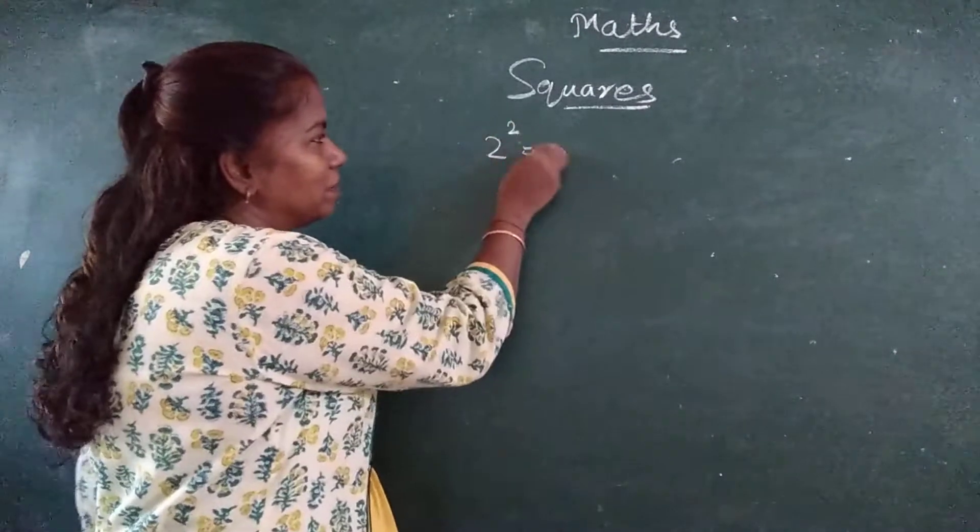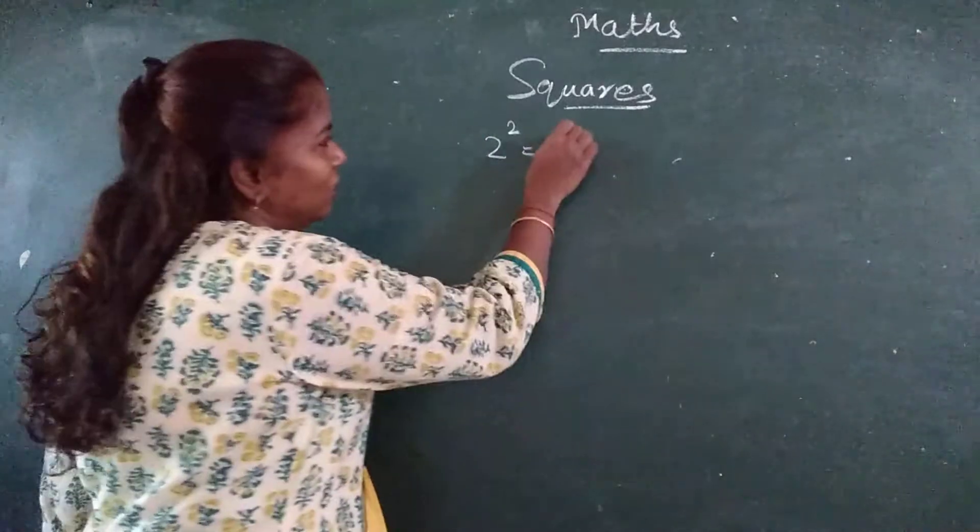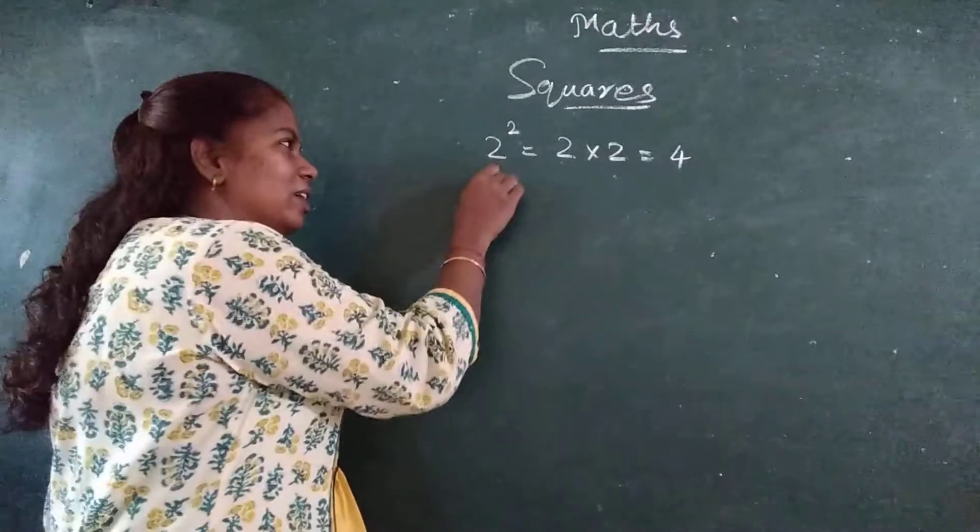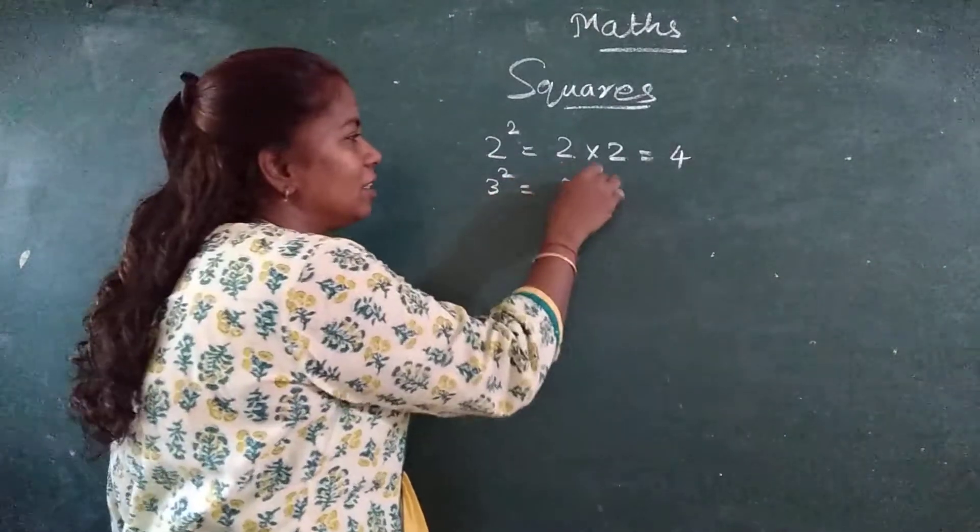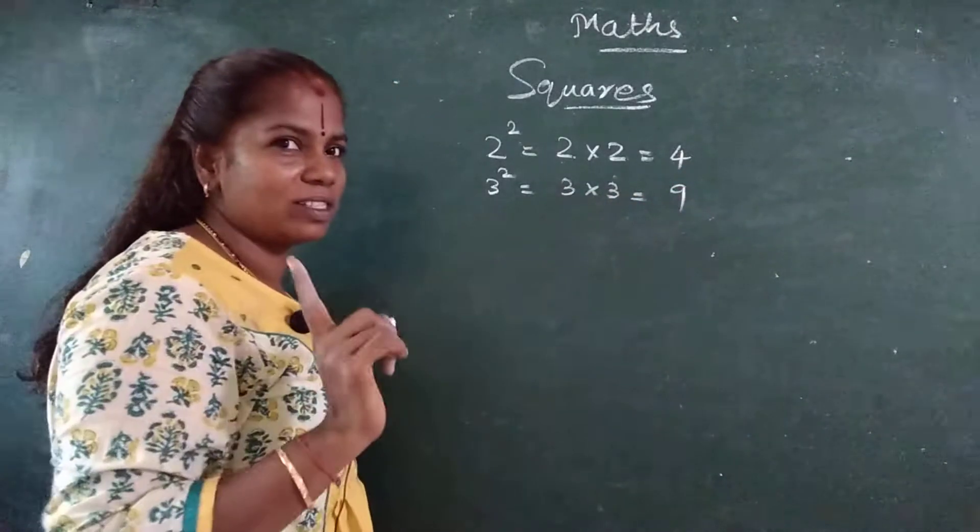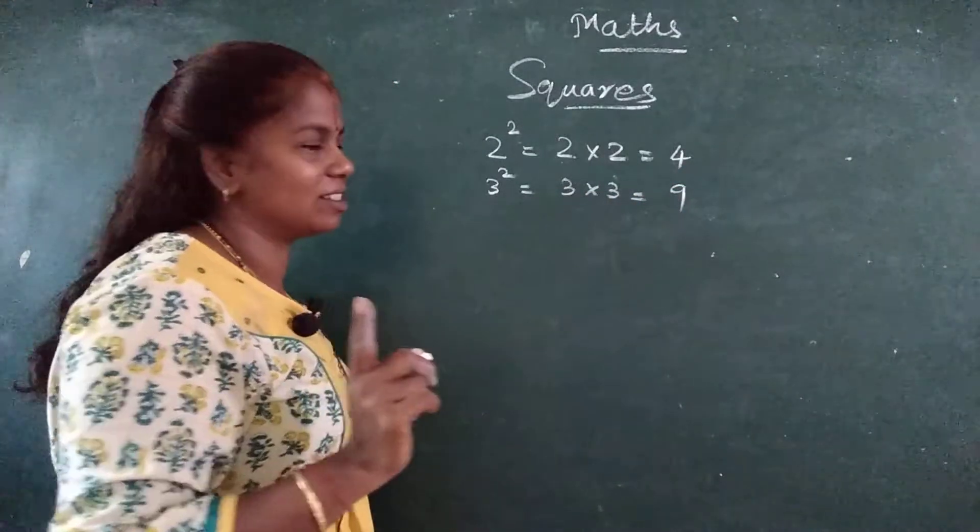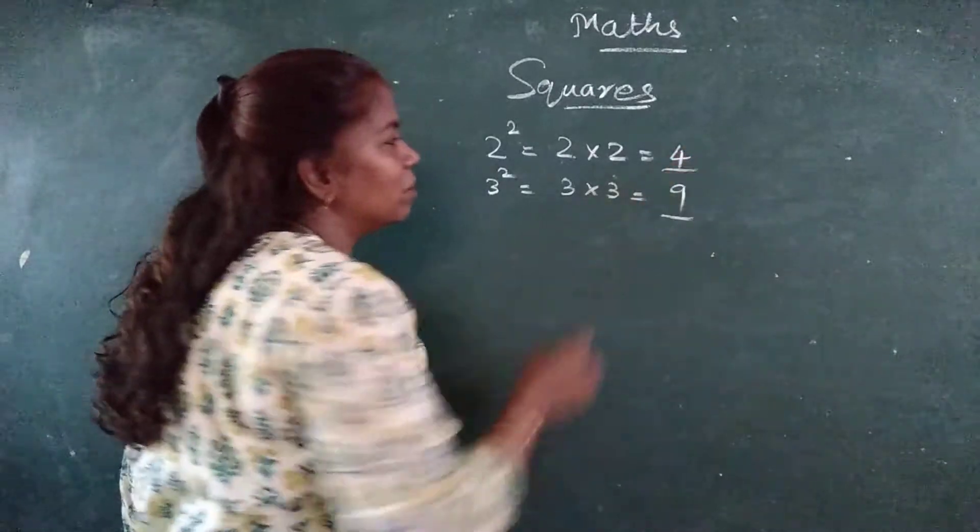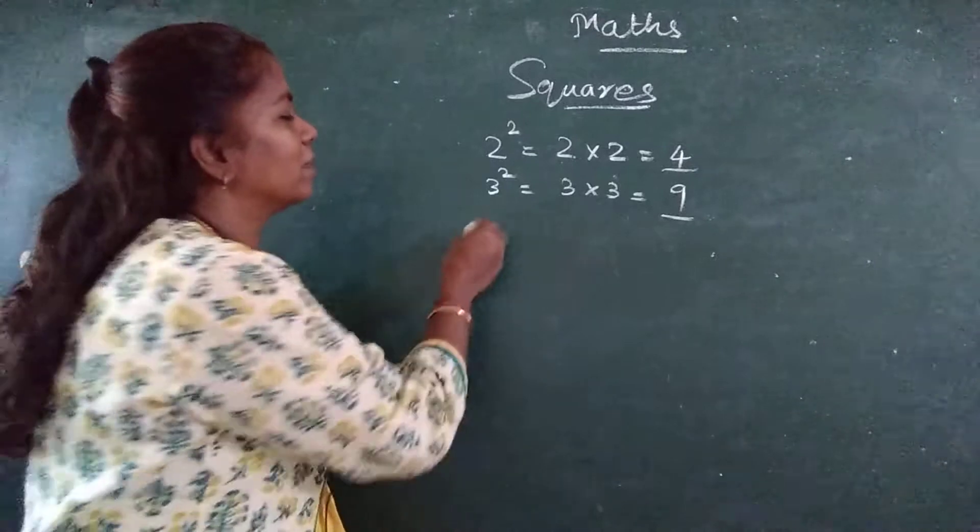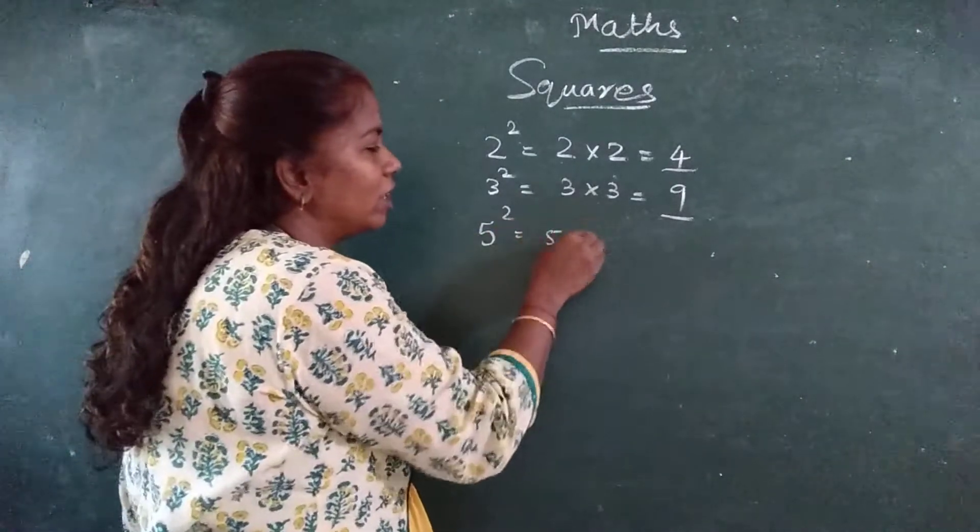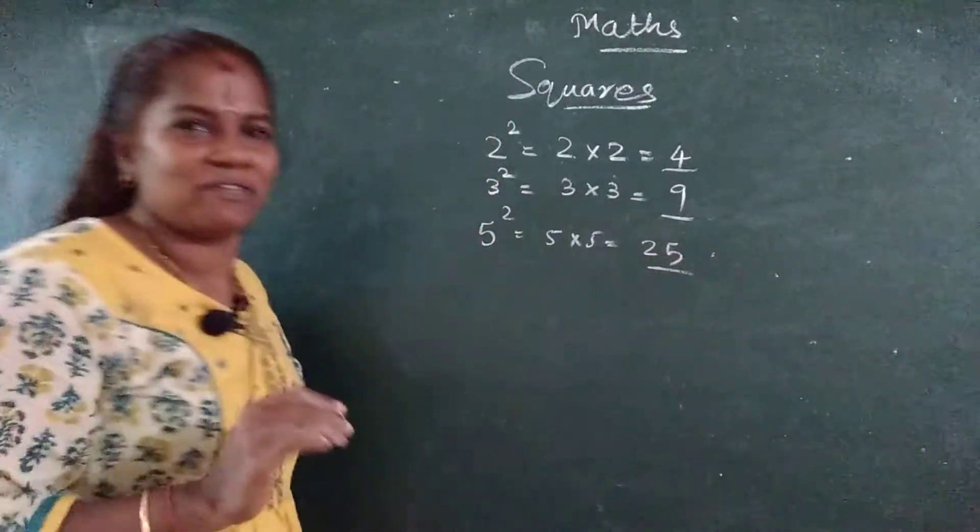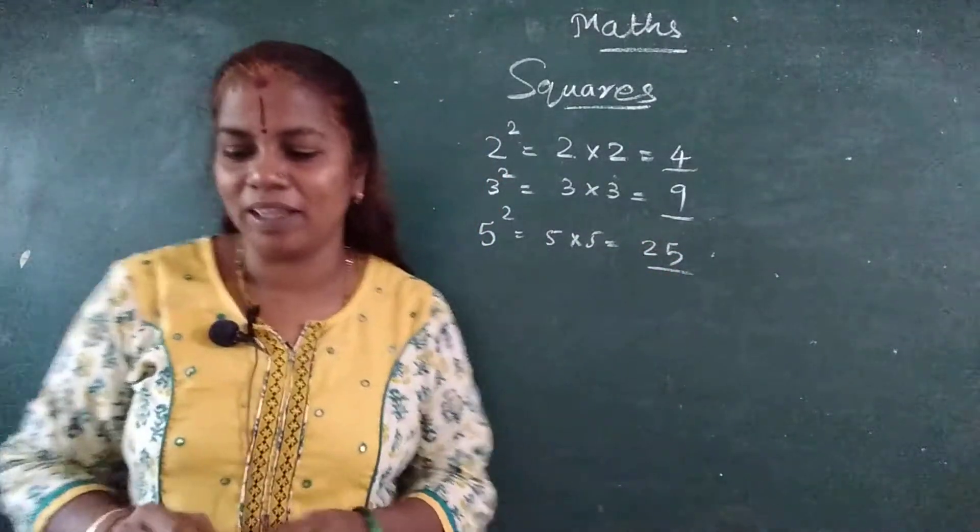Now 2 square. How will you do? 2 into 2 is 4. 3 square. 3 into 3, how much? 9. Not 6. I heard someone saying 6. Remember that you are not adding, you are multiplying it. 5 square. 5 into 5 is 25.